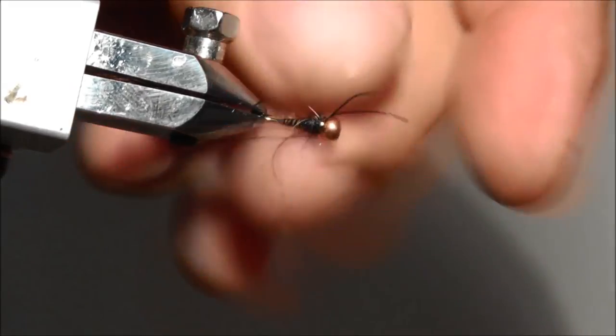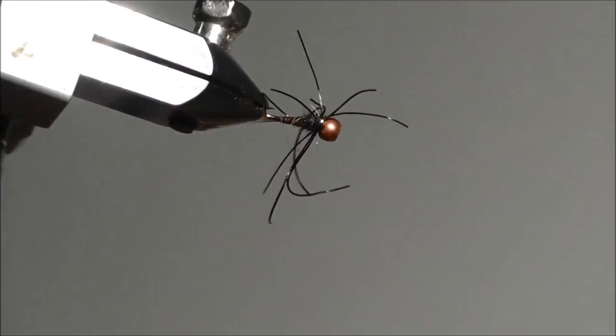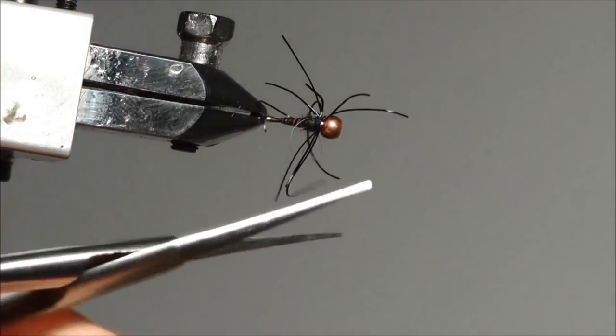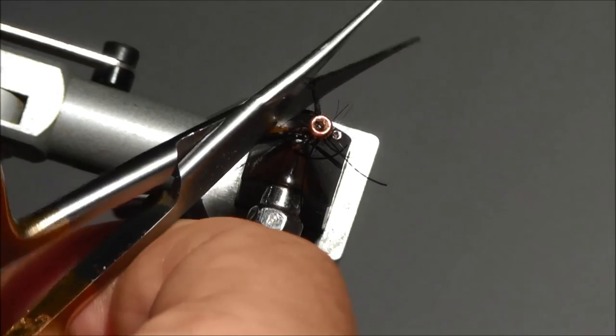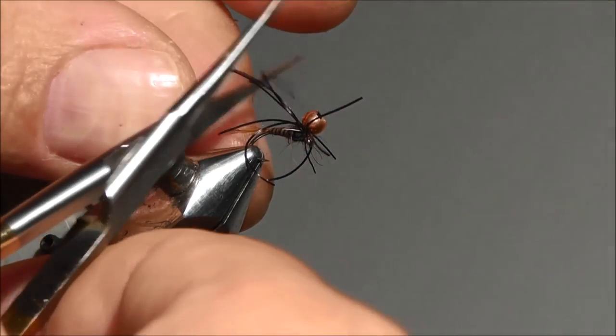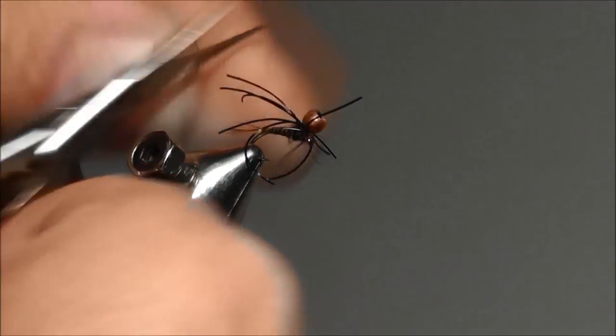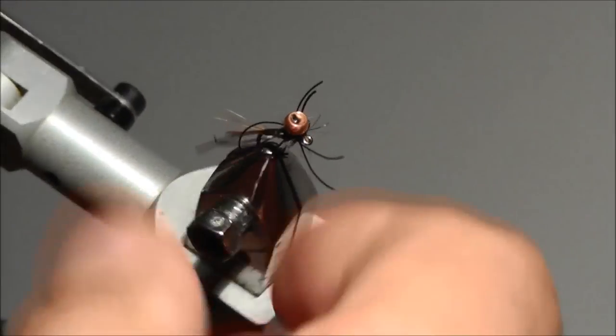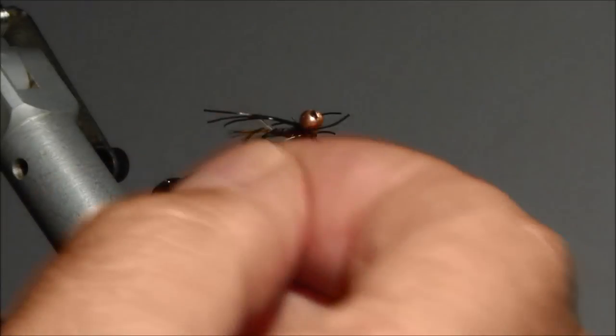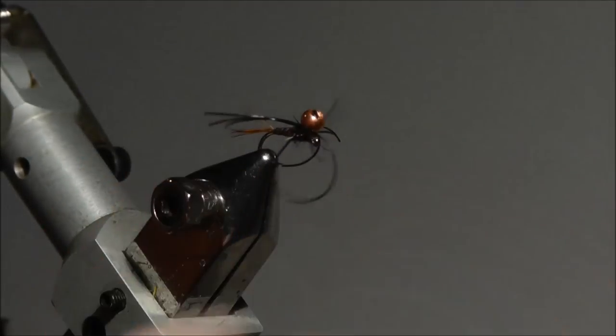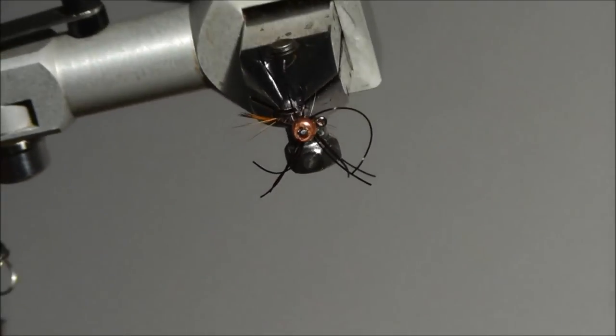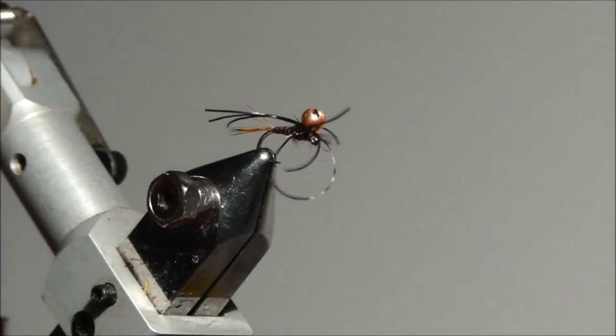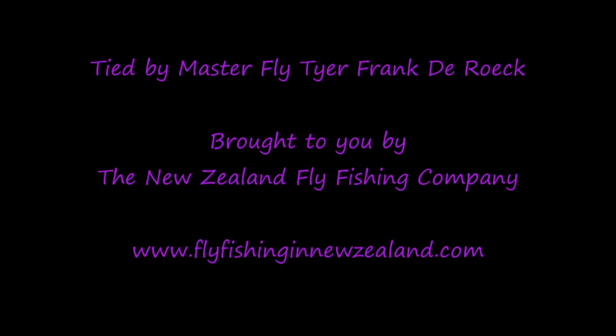As you can see the legs are still a bit too long. So in that case you can adjust them by just snipping off. Just like that. You have a long leg here. And that's how a sink hammer looks like. And that's how you do it.